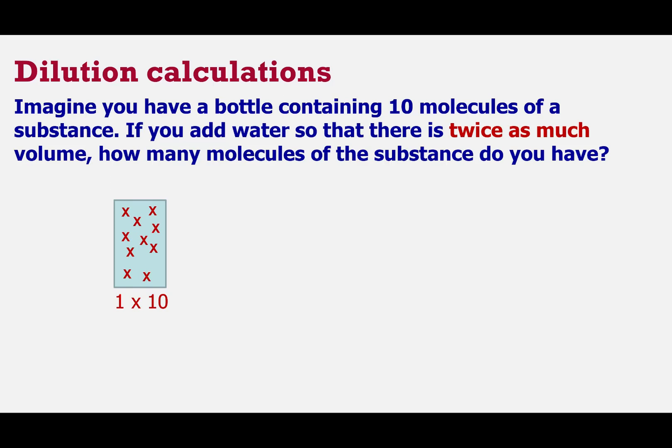If we were to add to that the same amount of water, the same volume of water, so that there was twice as much volume overall, how many molecules of the substance would we have? Well, the answer is that we still have 10 molecules. We haven't made molecules, we haven't destroyed molecules, we've just diluted them. So we've gone from having one lot of 10 molecules to having essentially two volumes worth of five molecules in each.